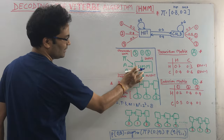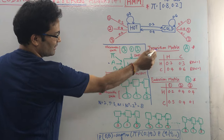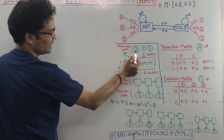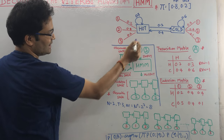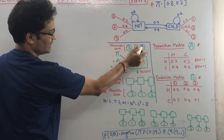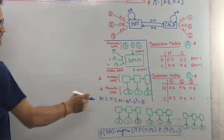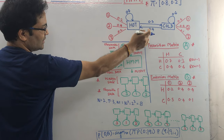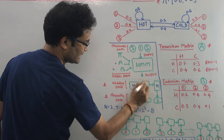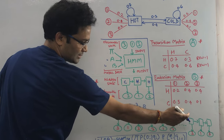Similarly, in the hidden Markov model, we give the initial probability, A — which means the transition matrix — and B — which means the emission matrix. Once you create the model, you give the observable state. In this case, the person ate 3 ice creams on day one, 1 ice cream on day two, and 3 ice creams on day three, and we have to find out what the hidden state would be. We have two hidden states, so it could be H-C-H, H-H-H, C-H-H — many combinations are possible.